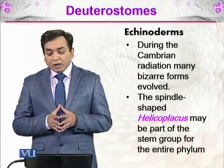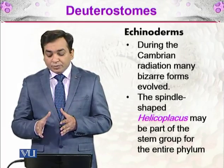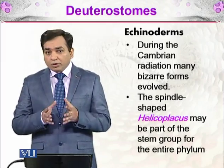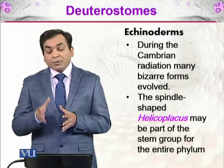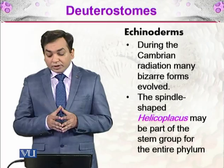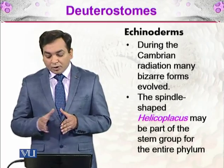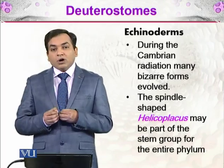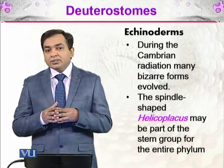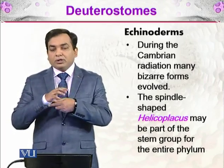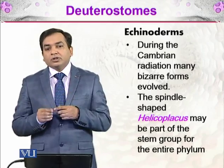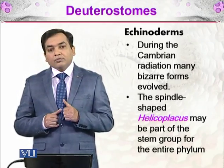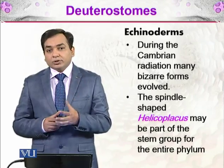During the Cambrian radiation, many bizarre forms evolved. Many different types of organisms formed during the Cambrian radiation, and among those were the echinoderms. There was the spindle-shaped helicoplecus — spindle meaning thicker in the middle and thinner across the length — which may be part of the stem group for the entire phylum and possibly the ancestor of the whole phylum.